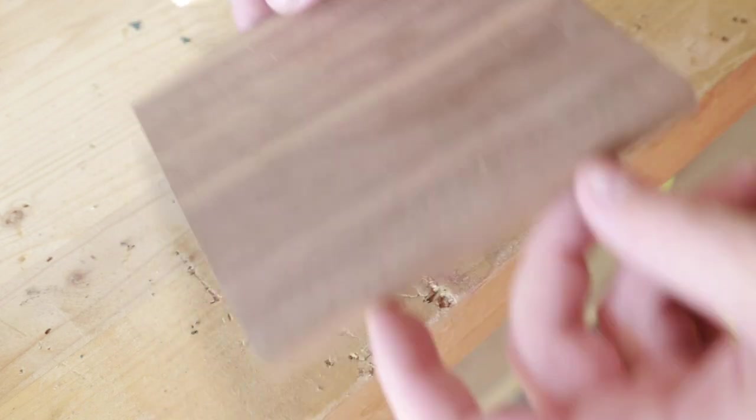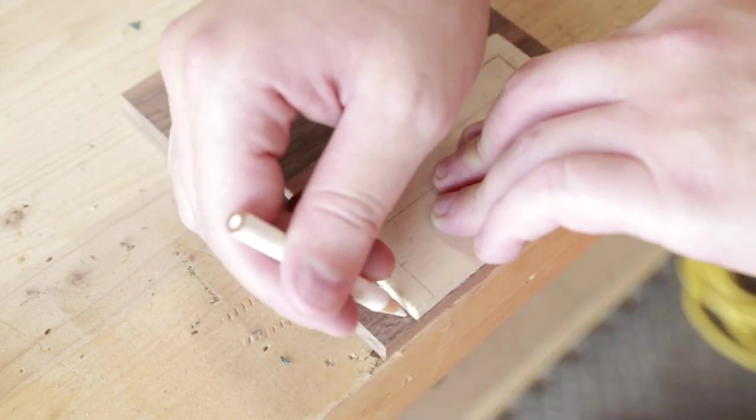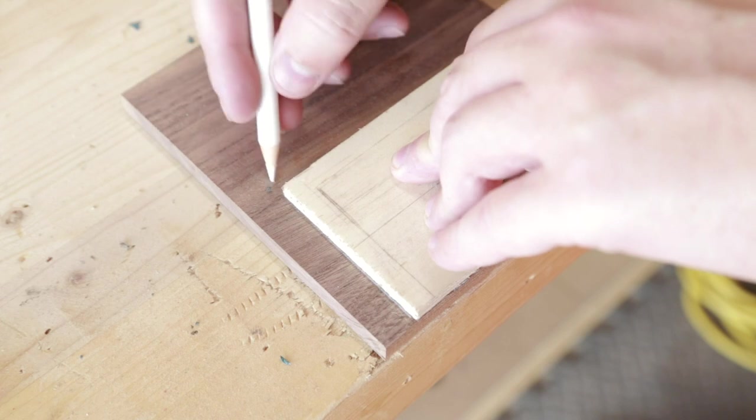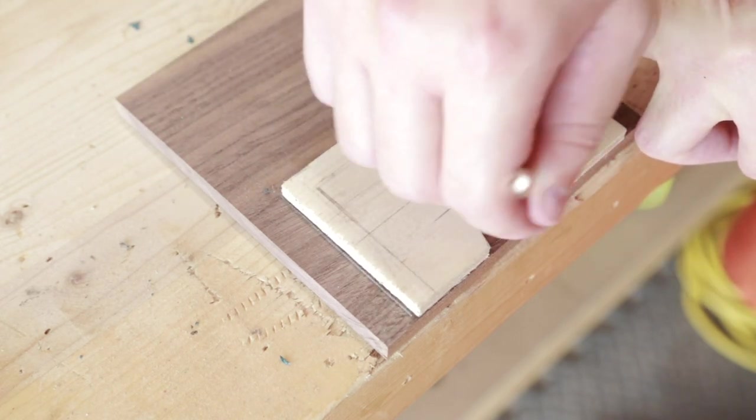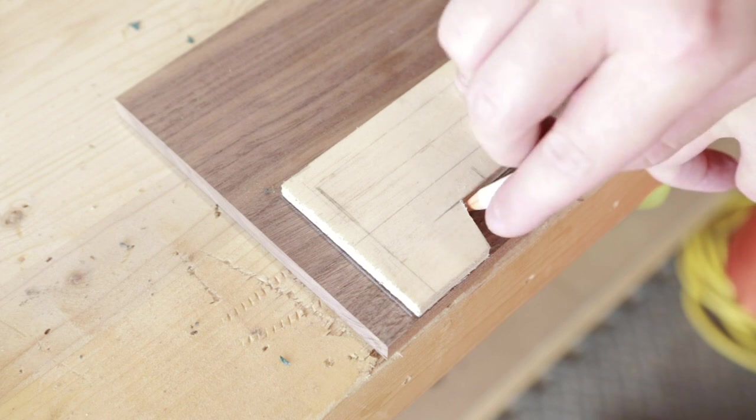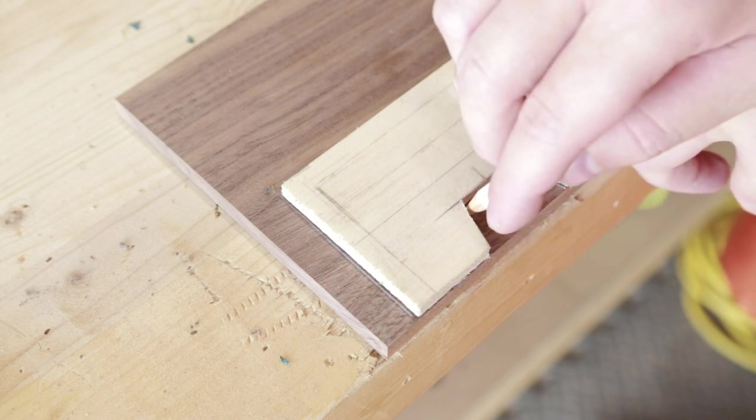I will use this scrap piece of walnut to make the wallet. This piece is three-eighths of an inch thick, but you can make it thicker if you wanted to have more space for credit cards. I used the template to trace out the wallet and then I could put the template to the side. I will use it again later when we batch out the rest.